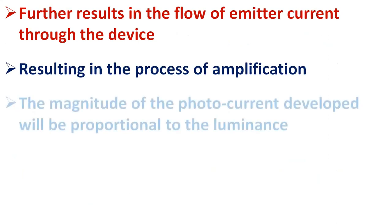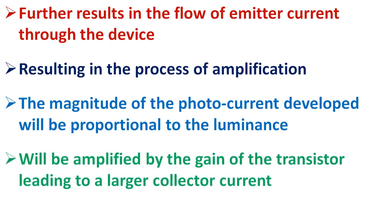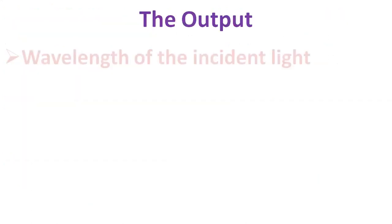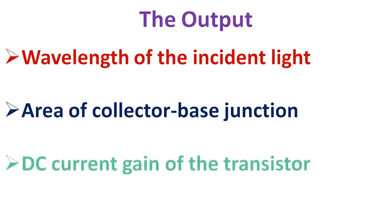This is because the magnitude of the photocurrent developed will be proportional to the luminance and will be amplified by the gain of the transistor, leading to a larger collector current. The output of the phototransistor depends on various factors like wavelength of the incident light, area of the light-exposed collector-base region, and DC current gain of the phototransistor.